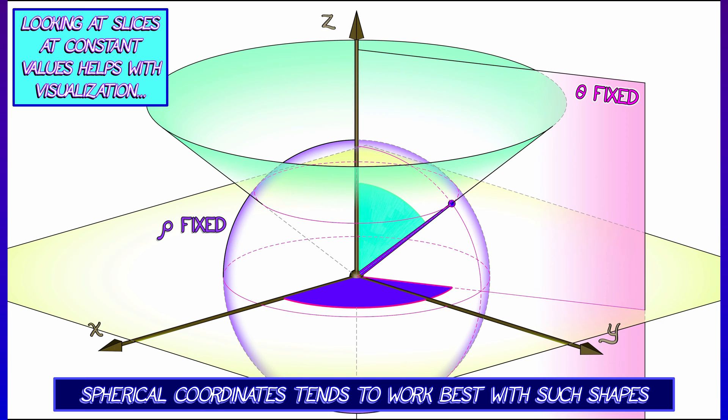And then if we look at the set of all points of a fixed theta, then just as with cylindrical coordinates, that's going to be a half plane abutting the z axis. And for points of fixed phi, that is going to be a cone with cone point at the origin.